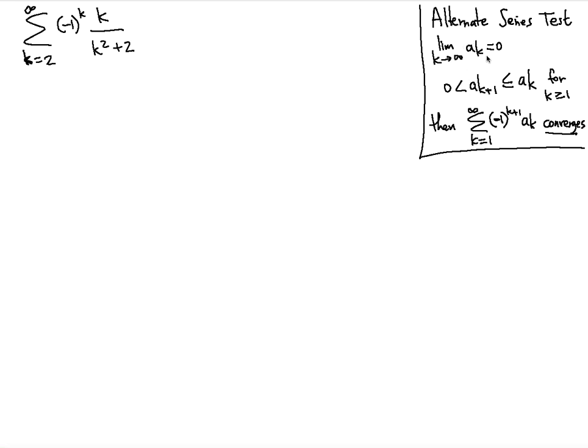Using the alternate series test, we're going to satisfy this condition first. a subscript k is going to be k over k squared plus 2. That's what you see here.